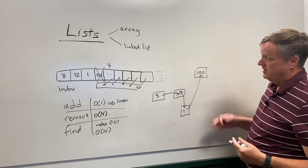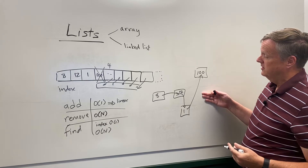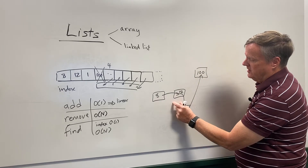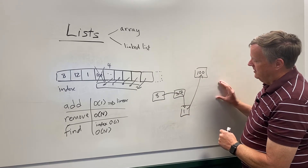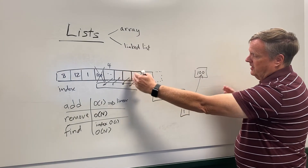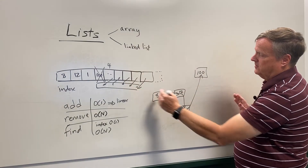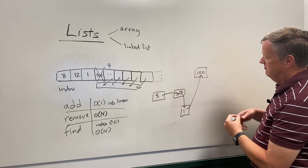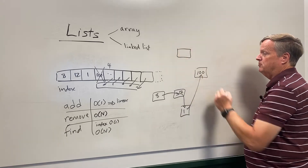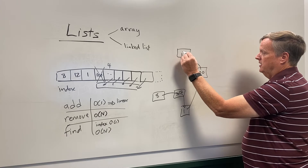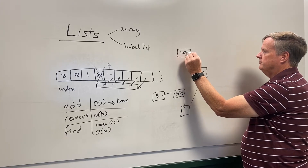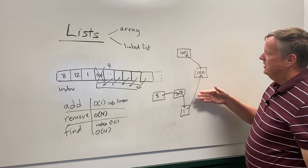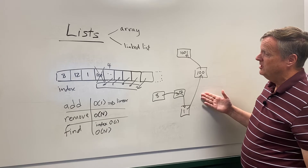The difference with a linked list is that you allocate your elements anywhere you want in memory, and then you have a pointer from one to the next. So here's a linked list with elements 8, 12, 1, 100. The key advantage over an array is that memory doesn't have to be contiguous. To add an element you just find a small block of memory anywhere and point to it — no need to reallocate and shift everything.